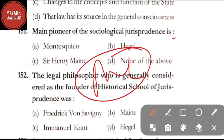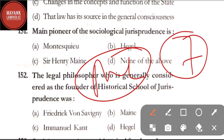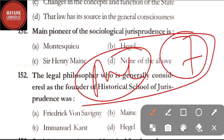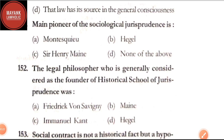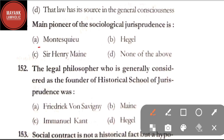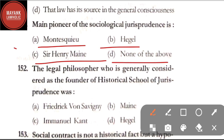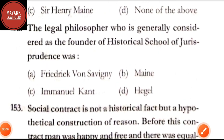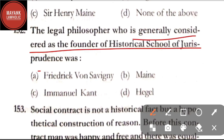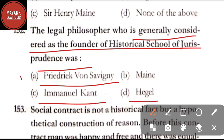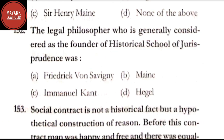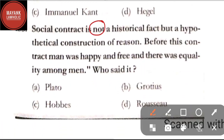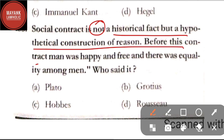Hello everyone, welcome back to Mayank Lawholic — this is the seventh video in the series. Question number 151: main pioneer of sociological jurisprudence is — option A: Montesquieu; option B: Hegel; option C: Sir Henry Maine; option D: none of the above. The correct answer is option A, Montesquieu. Question number 152: the legal philosopher generally considered as the founder of historical school of jurisprudence was — option A: Frederick Von Savigny; option B: Maine; option C: Emmanuel Kant; option D: Hegel. The correct answer is option A, Frederick Von Savigny.